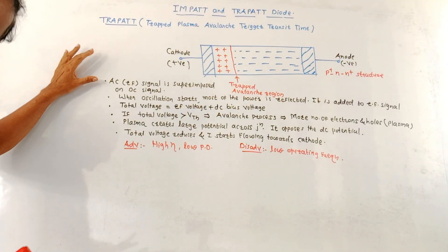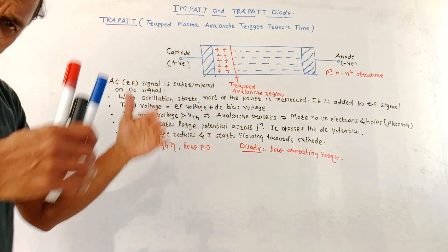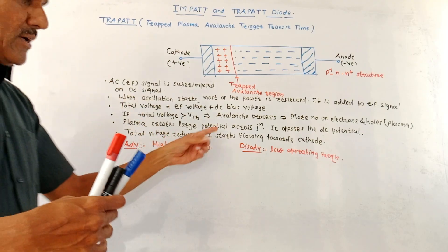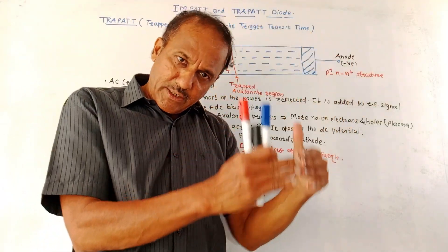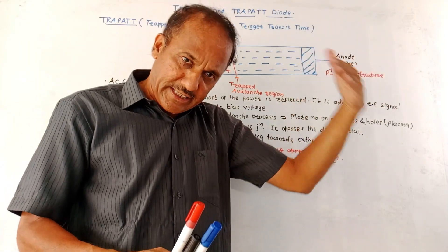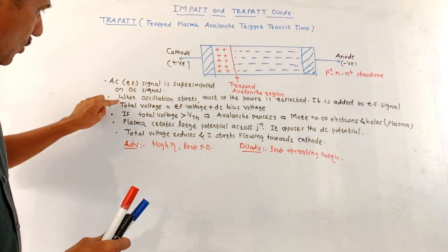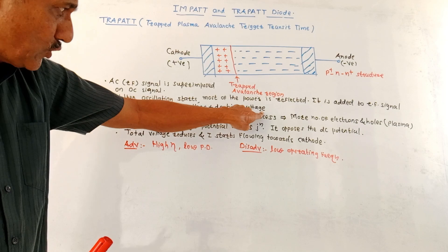We know that AC signal is superimposed on the DC bias signal. So whenever oscillation starts, most of the power is getting reflected. This reflected power adds with the RF signal. That means the strength of RF signal increases.